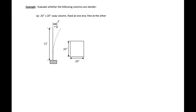In this example problem we're going to examine several different columns to see whether we need to consider slenderness effects or not. The first column is a 20 inch by 20 inch sway column that's fixed at one end and free at the other. This case gives us an effective length factor k of 2.0.